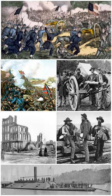Among the ordinances of secession passed by the individual states, those of three — Texas, Alabama, and Virginia — specifically mentioned the plight of the slaveholding states at the hands of Northern abolitionists. At least four states — South Carolina, Mississippi, Georgia, and Texas — also passed lengthy and detailed explanations of their causes for secession, all of which laid the blame squarely on the movement to abolish slavery. These states agreed to form a new federal government, the Confederate States of America, on February 4, 1861. They took control of federal forts and other properties within their boundaries with little resistance from outgoing President James Buchanan, whose term ended on March 4, 1861.